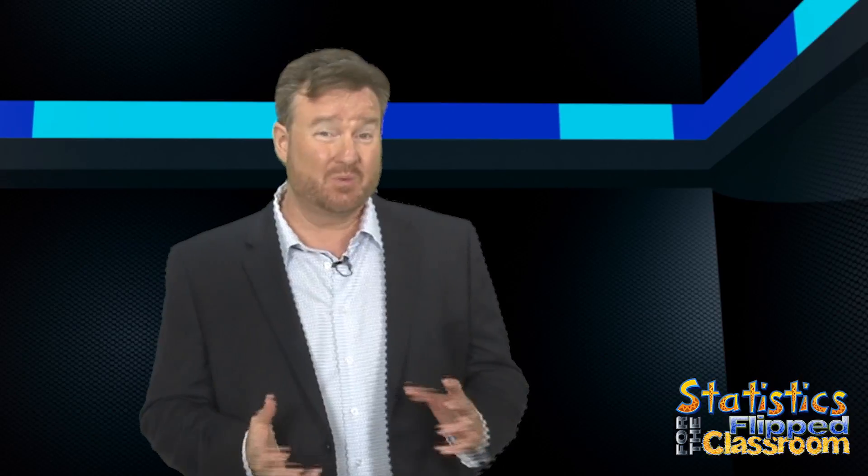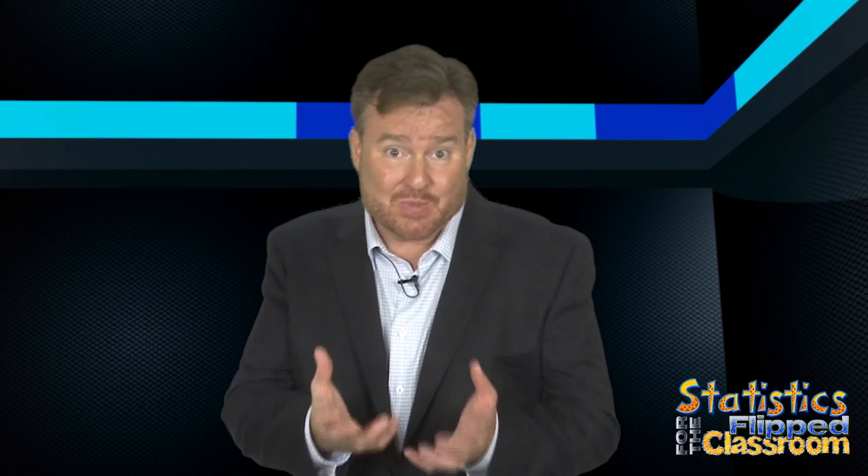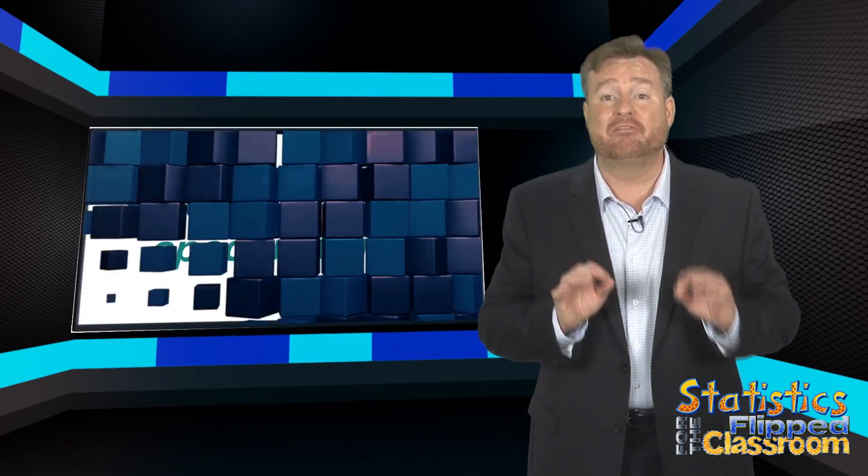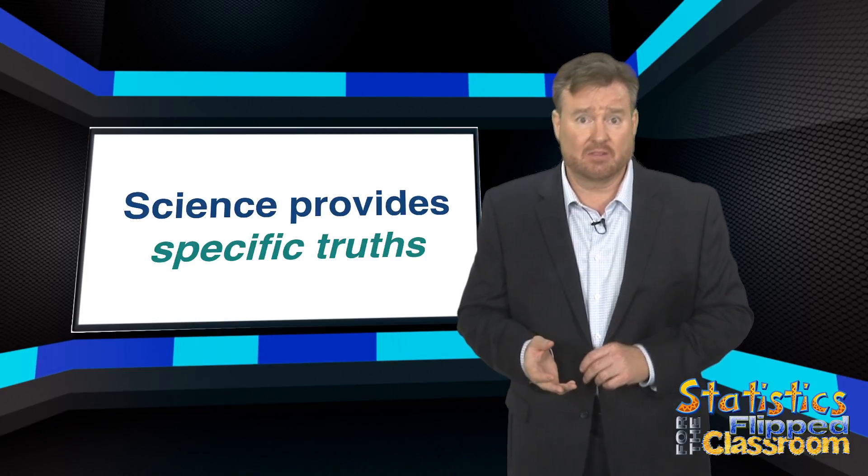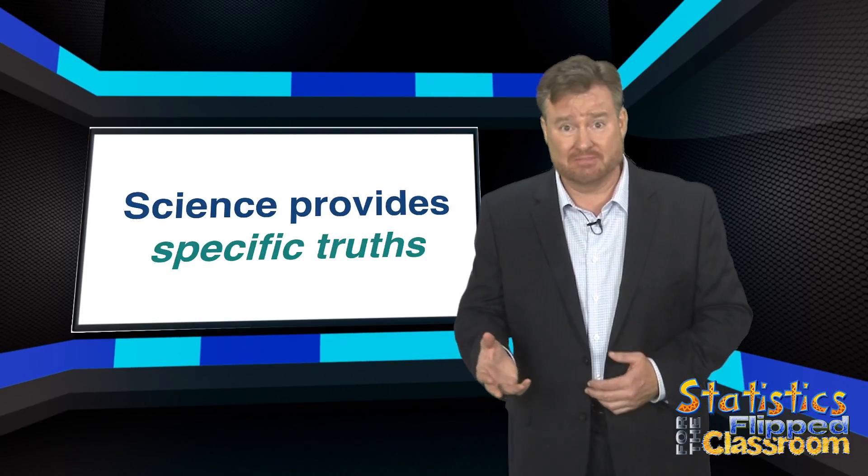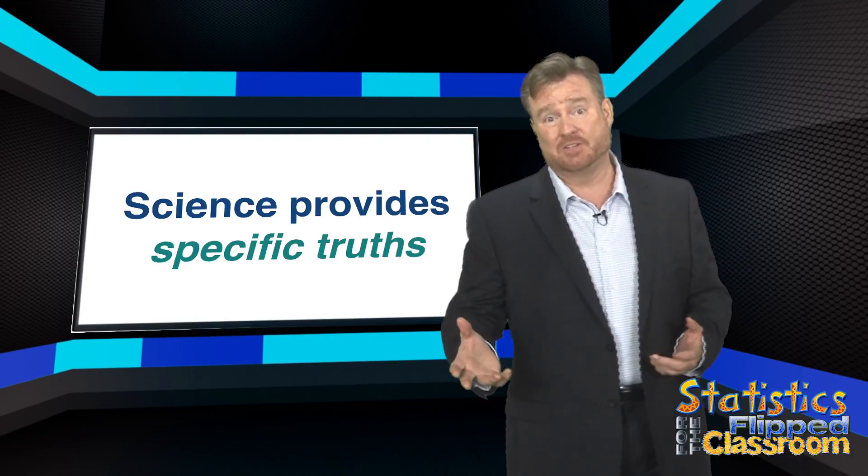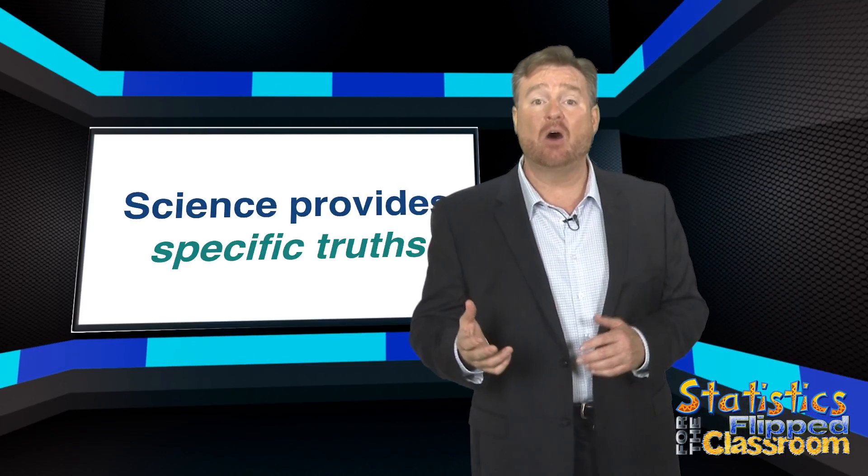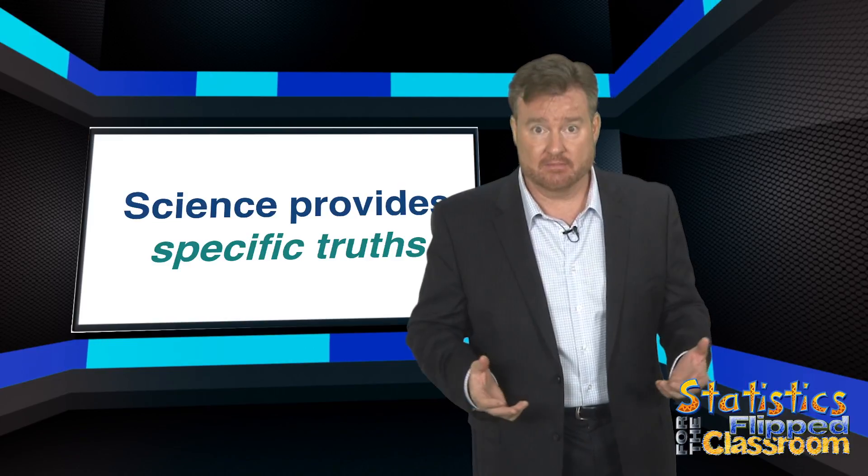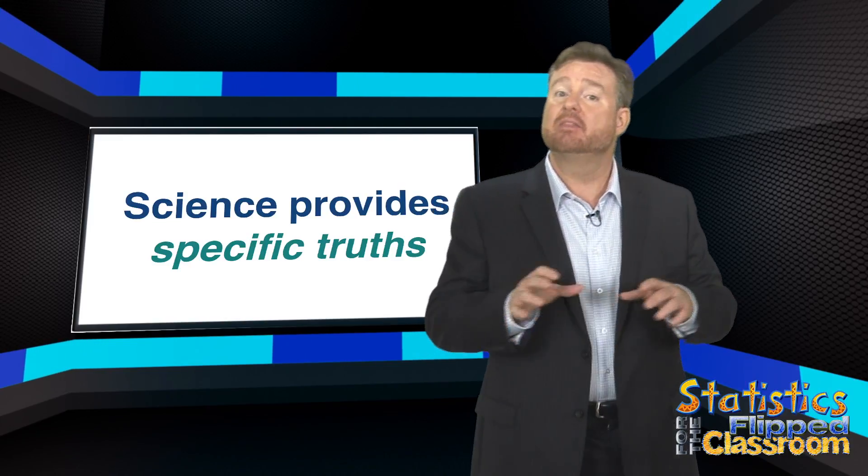In science, we're not really looking for universal truths. We're a bit more modest in our pursuits. We could remember that science has given us some pretty profound specific truths, like gravity, and the laws of physics, and medicine, and psychology, and physiology. And we have a pretty good grasp of how and when these explanations work, and under what conditions they don't work.